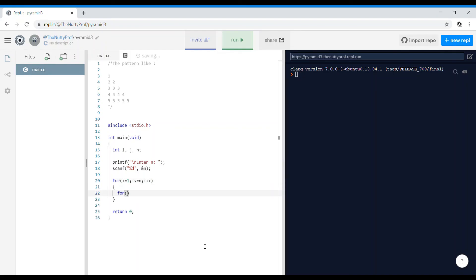For j equals 1, j is less than or equal to i, j plus plus. And we'll be printing the value of i. So %d leave a space, print the value of i, and write the statement for printing the next line statement. Now we'll go about executing it.